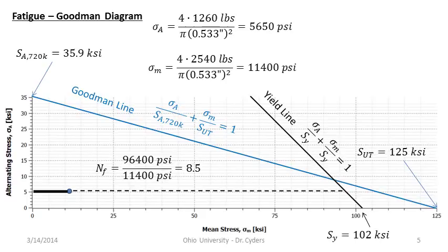Now we're looking at mean stress level rather than the maximum overall stress as in static design. The yield line is irrespective of the number of cycles. So if we know the alternating stress really well, our factor of safety in this case would be 8.5 — compared to the static design which looked at the maximum overall stress.